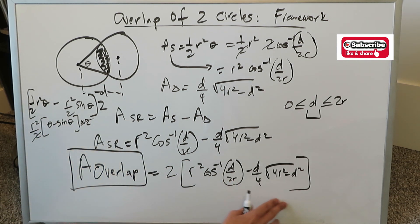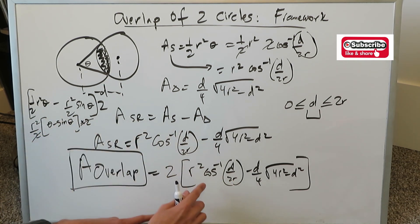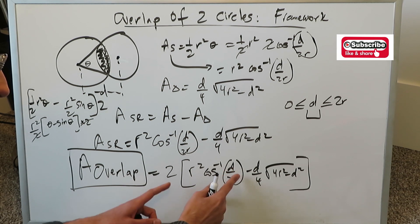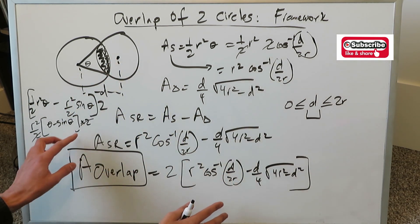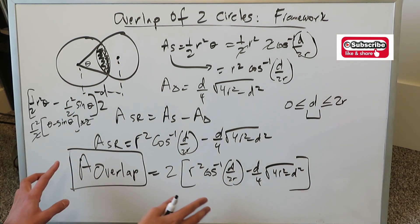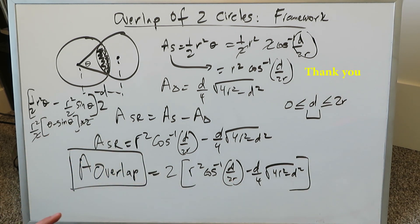In the distance-based formula there's no angle — only radii and the distance between the two centers. Both perspectives lead to the same numerical value for the overlap region. Thank you for watching this video. Hopefully you enjoyed it. Have a good day. Bye.